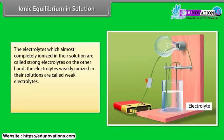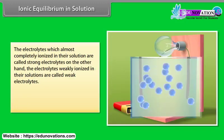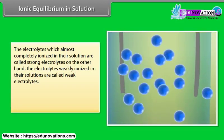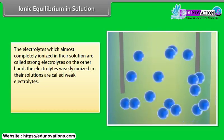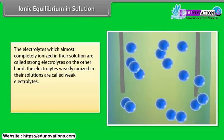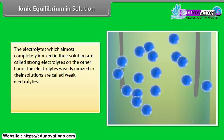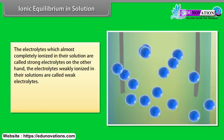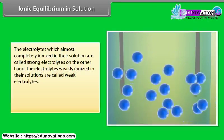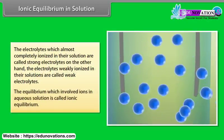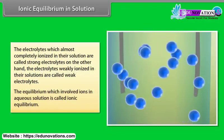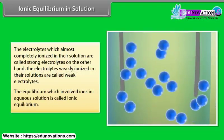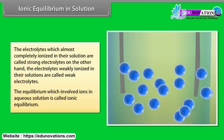The electrolytes which are almost completely ionized in their solution are called strong electrolytes. On the other hand, electrolytes weakly ionized in their solutions are called weak electrolytes. The equilibrium which involves ions in aqueous solution is called ionic equilibrium.